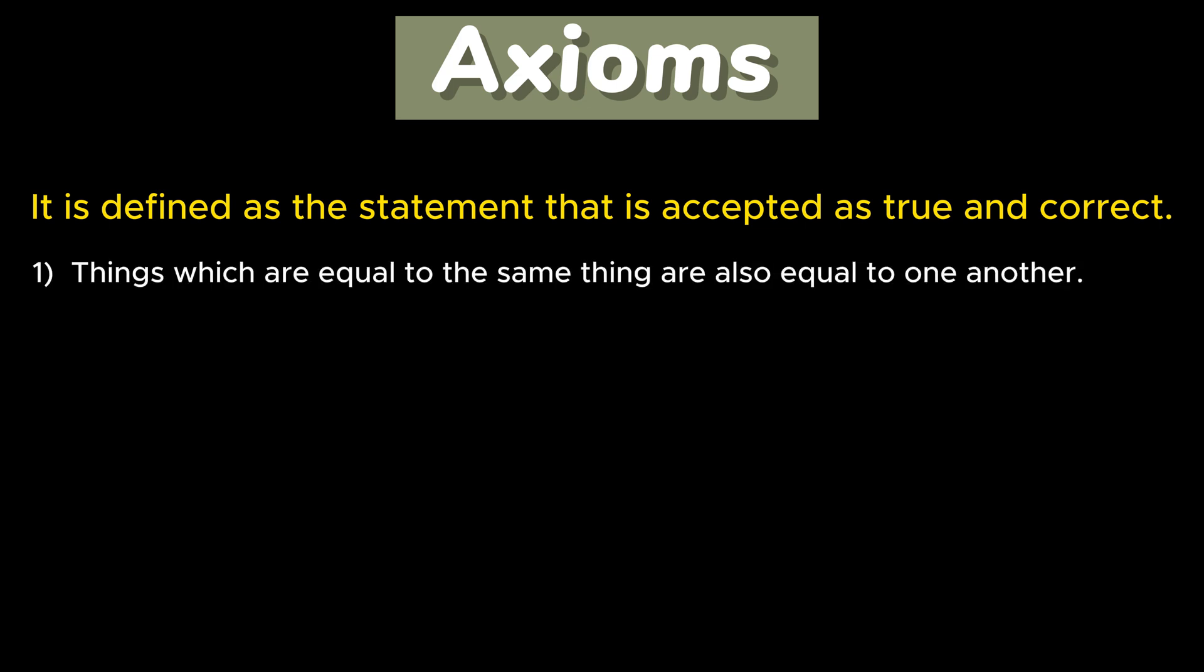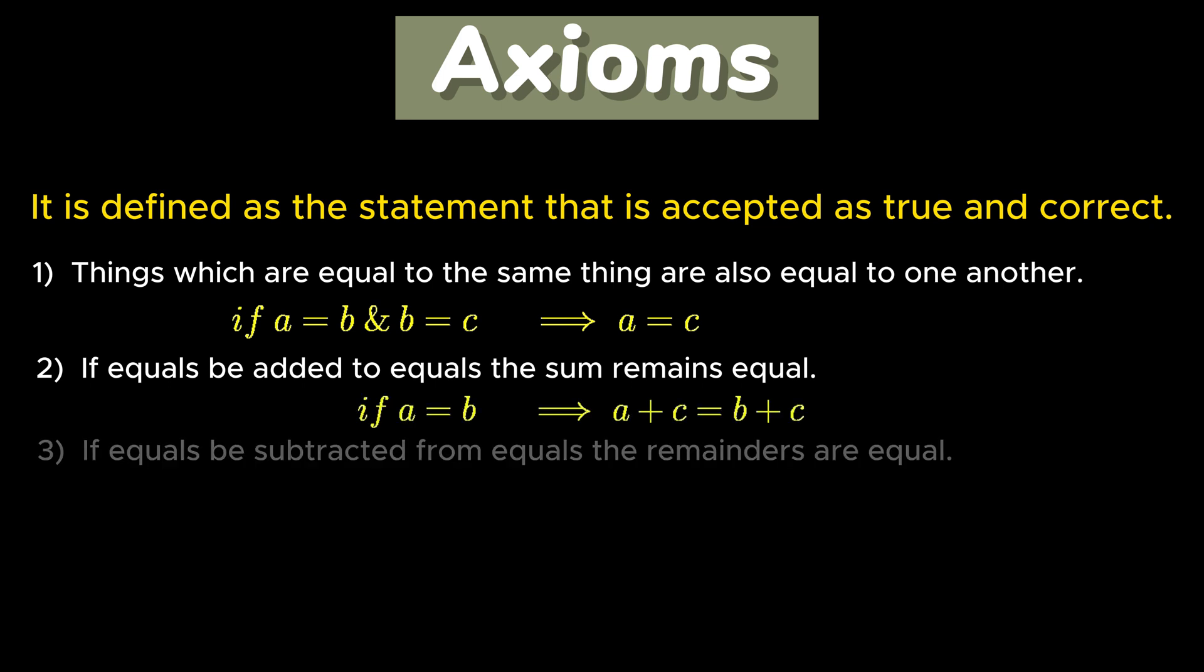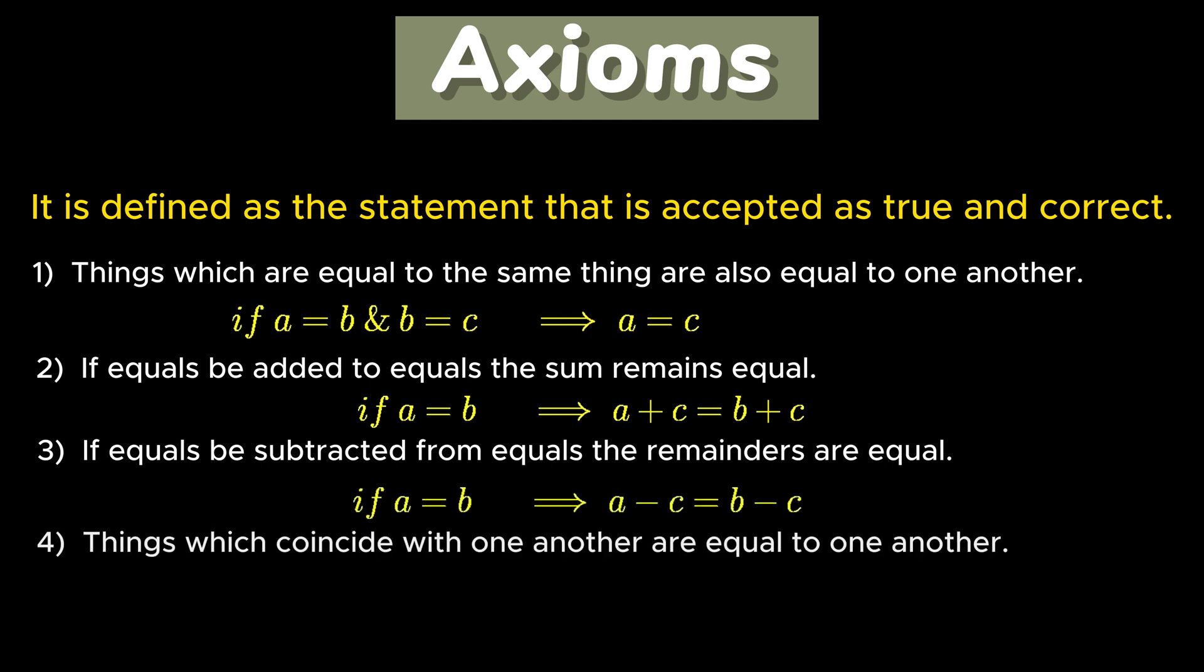So let's continue with our first axiom. Things which are equal to the same thing are also equal to one another. Second axiom states that if equals be added to equals, the sum remains equal. Third axiom states that if equals be subtracted from equals, the remainders are equal. Fourth axiom states that things which coincide with one another are equal to one another. Fifth axiom states that the whole is greater than the part.